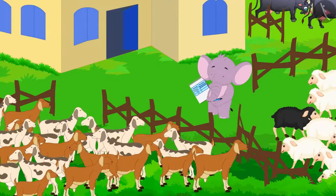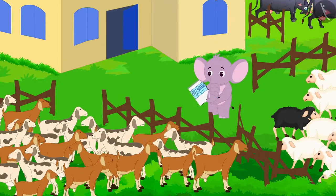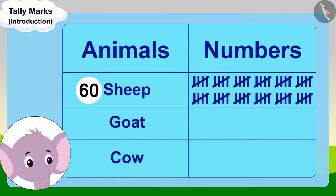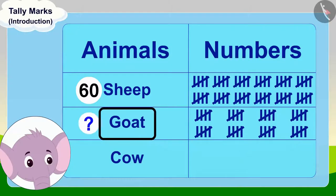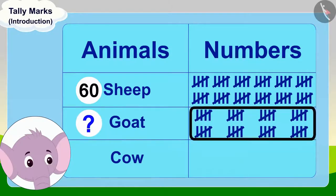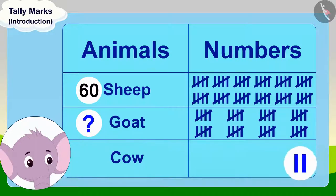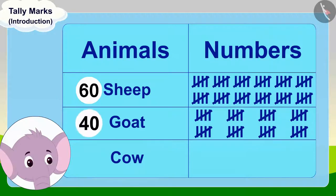Now, Appu started counting his goats. Appu drew tally marks for the goats in his table. Can you tell how many goats Appu has in total? You can stop the video and find the answer. That's right, Appu has forty goats.